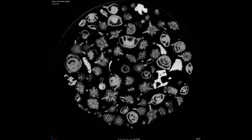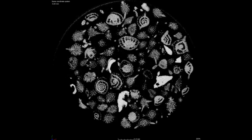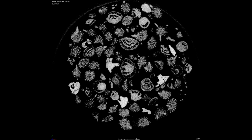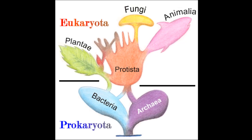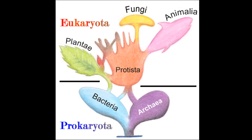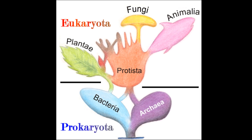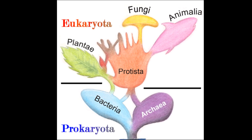Foraminifera, or forams for short, are single-celled protists. A protist is a eukaryotic organism that is not a plant, animal, or a fungus.